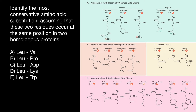Here's the problem: identify the most conservative amino acid substitution, assuming that these two residues occur at the same position in two homologous proteins. We have to choose between these couples of substitutions with leucine. Such substitutions would cause evolution. Evolution is just a change in DNA sequence and thus in the sequence of amino acids.